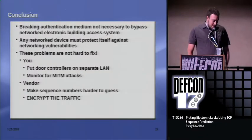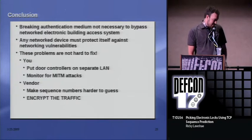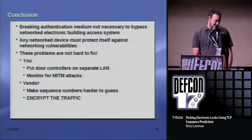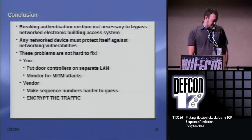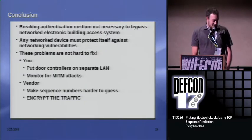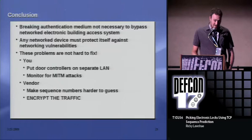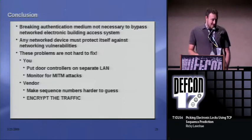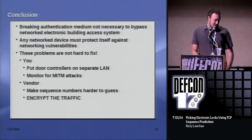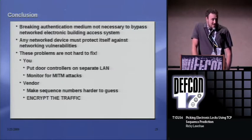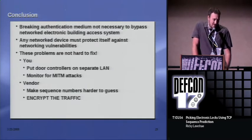My conclusion is it's not necessary to break the authentication medium in order to bypass these systems. These are network devices, and they need to protect themselves against network vulnerabilities. And it's not hard to fix. What you can do to protect yourself is obviously put your door controllers on a separate LAN that your users can't get to, and monitor that LAN for man-in-the-middle attacks. But really, what it comes down to is the vendors making their sequence numbers harder to guess and, for the love of God, encrypt the traffic.